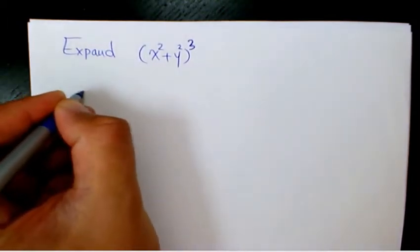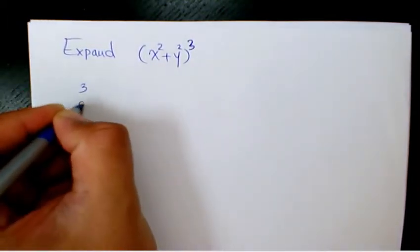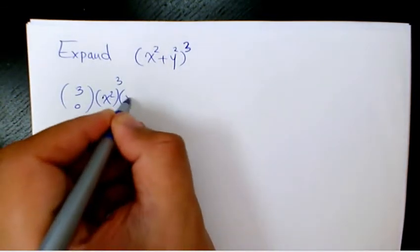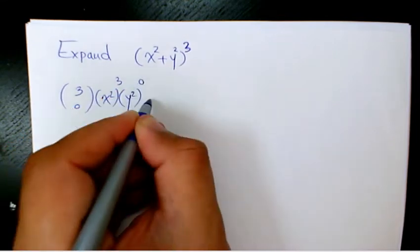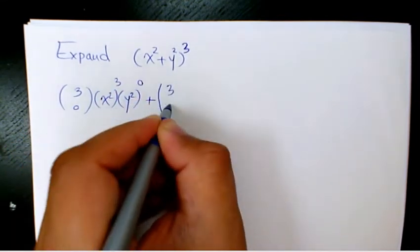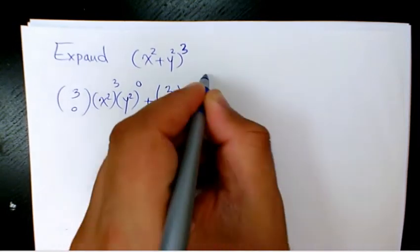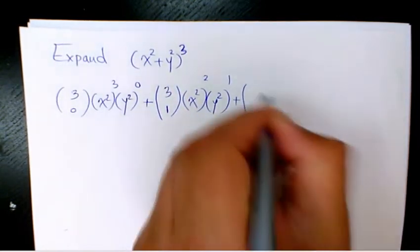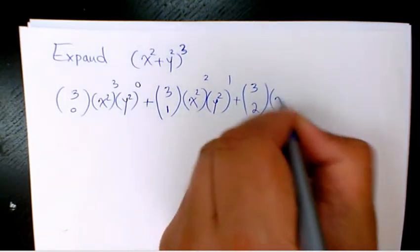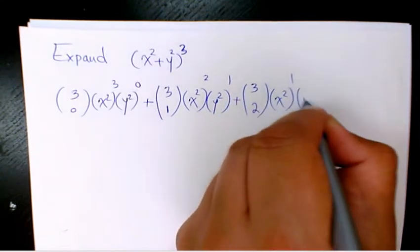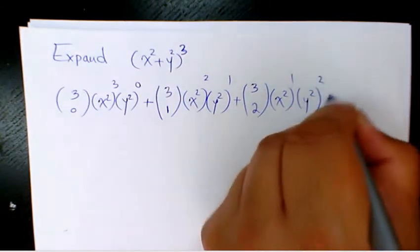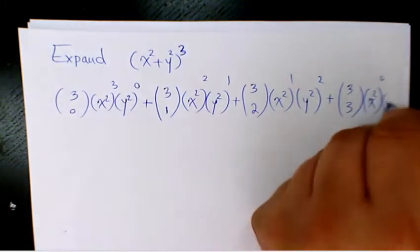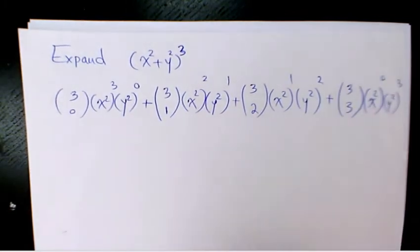When you expand (x² + y²)³, you're going to have: 3 choose 0 · (x²)³ · (y²)⁰, plus 3 choose 1 · (x²)² · (y²)¹, plus 3 choose 2 · (x²)¹ · (y²)², and finally 3 choose 3 · (x²)⁰ · (y²)³.